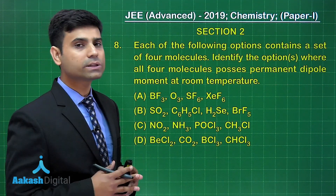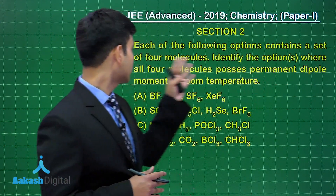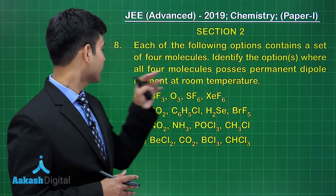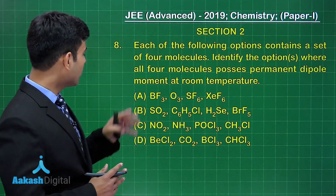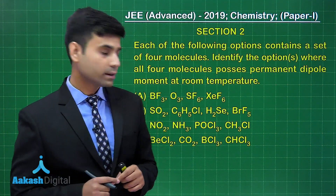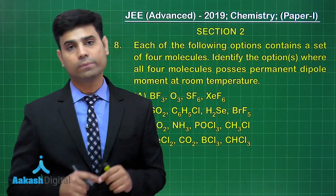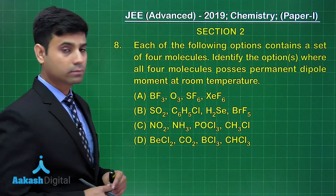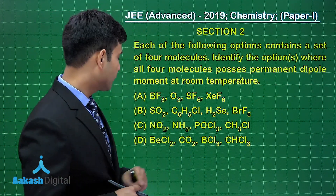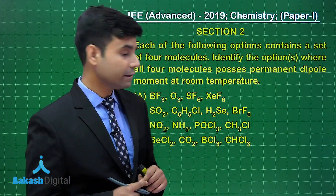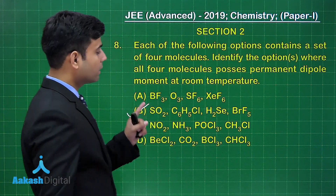The last question of this section asks: choose the option where all four molecules possess permanent dipole moment at room temperature. In option A, BF3 has zero dipole moment, so A cannot be the answer. In option B, SO2 has a dipole moment, C6H5Cl has a dipole moment, H2S has a dipole moment due to lone pairs, and BrF5 has a square pyramidal structure which gives a dipole moment — so all four in option B have permanent dipole moment.